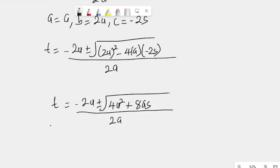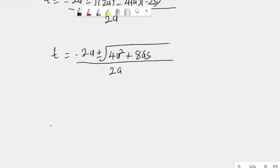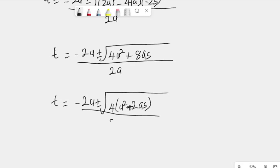And with that, if you look at the expression under the square root sign, there is a common factor there, which is 4. 4 can divide here, it can also divide here, so we can factorize it out. So that T becomes minus 2U plus or minus root 4 times U squared plus 2AS all over 2A.